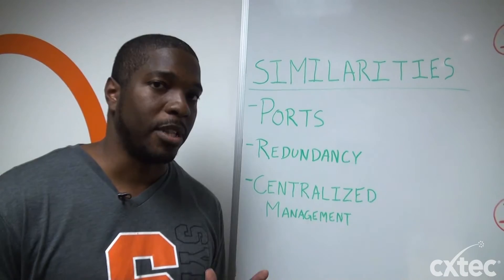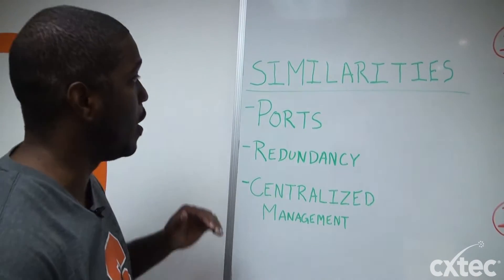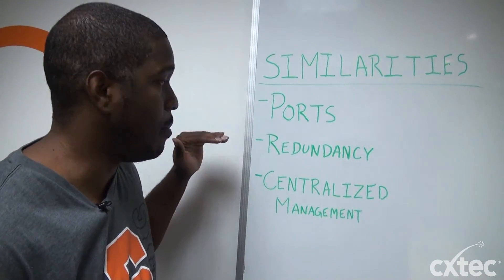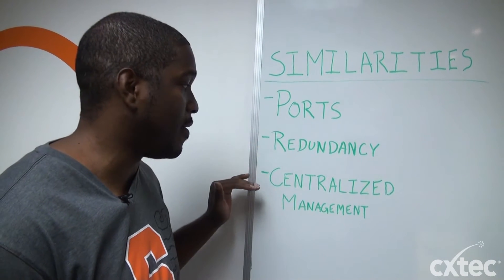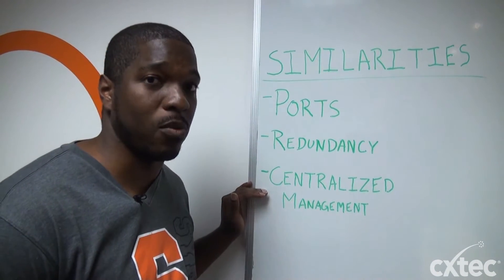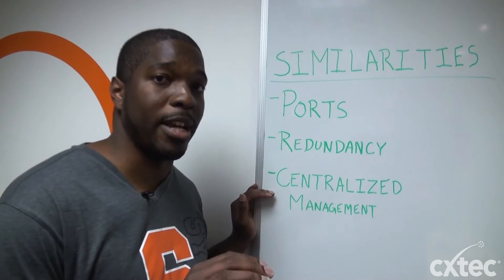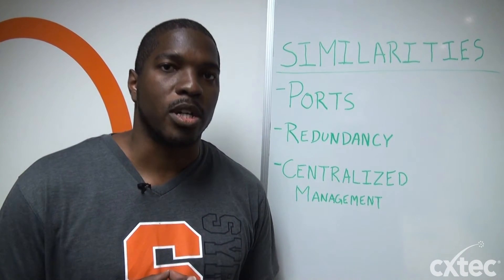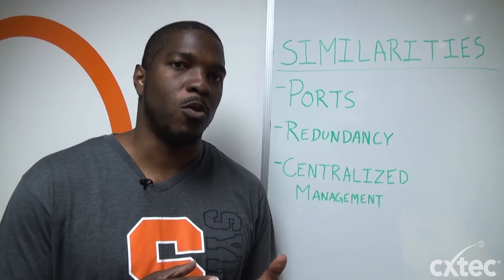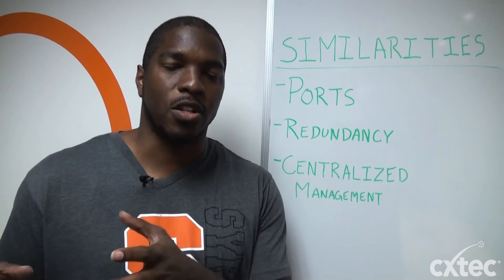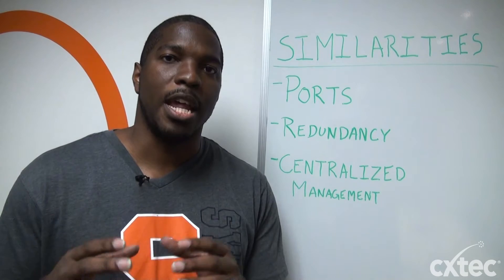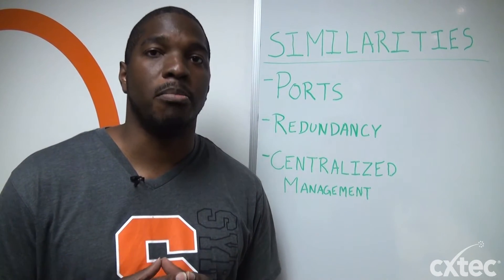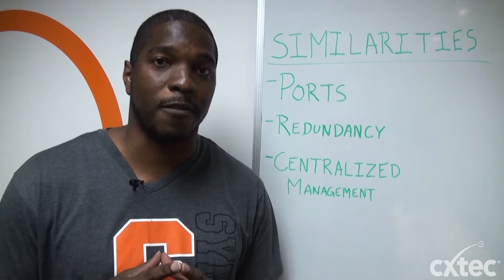Both of them have similarities. They both have a lot of ports, they both have redundancy, and they both have centralized management where you can get to a lot of ports from one place and configure them all. In most situations in the network, people will put the chassis in the core and the switches on the edge. That may work for some people, but maybe not all people. All networks are different.